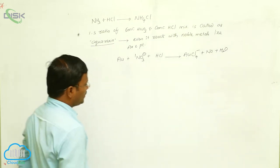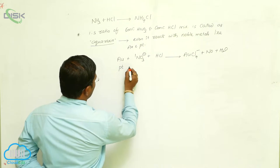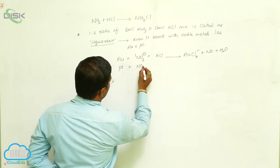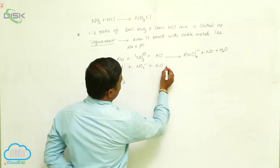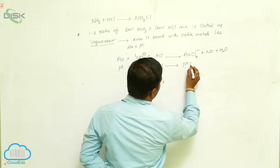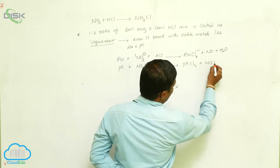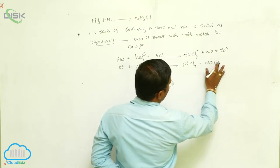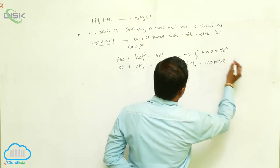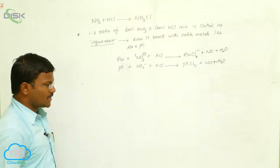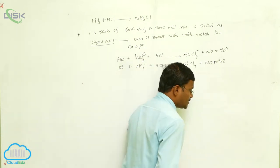Similarly, platinum also reacts with aqua regia. Pt reacts with NO3⁻ and HCl to produce platinum tetrachloride along with formation of NO and water. These are the chemical reactions generally exhibited by aqua regia.